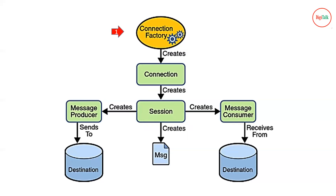In summary: a Connection Factory acts as a lookup service that connects your application with the JMS provider, creating a connection and establishing a session. If an application is sending a message, it acts as a message producer and sends to a destination — either a queue or a topic. If an application is receiving a message, it acts as a message consumer and connects to that destination to receive the message. That covers the basic concepts of JMS.